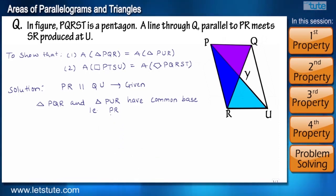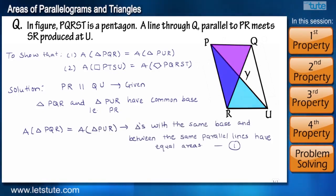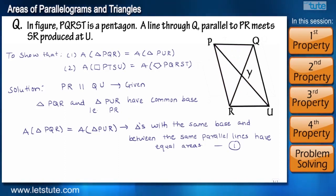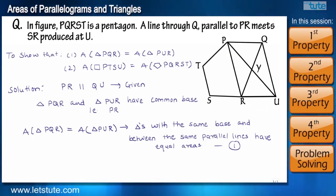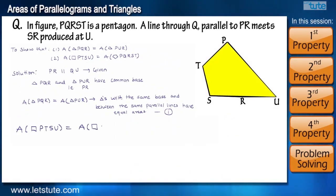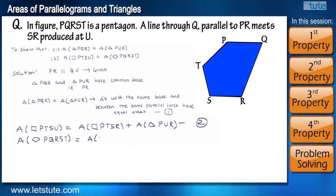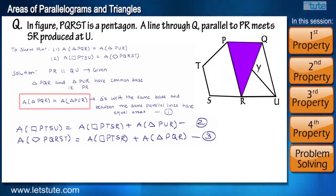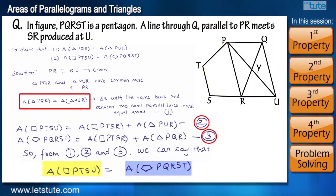Now we can say that area of triangle PQR is equal to area of triangle PUR. Here we are done with the first part of the solution. The next part says that we have to prove that the pentagon and the quadrilateral are having equal areas. Now the second part may look complicated but you will see how we can easily solve it using the first part itself. Here we can split the quadrilateral into quadrilateral PTSR and triangle PRU. And in the same way we can split the pentagon into quadrilateral PTSR and triangle PRQ. And as we have already proved that both the triangles have same area, so from steps 1, 2, and 3 we can say that the quadrilateral and the pentagon will also have equal area.